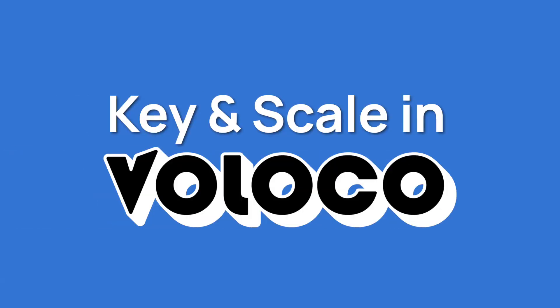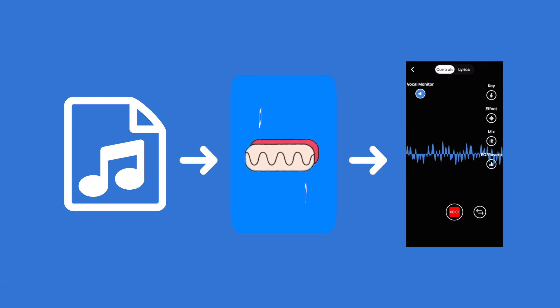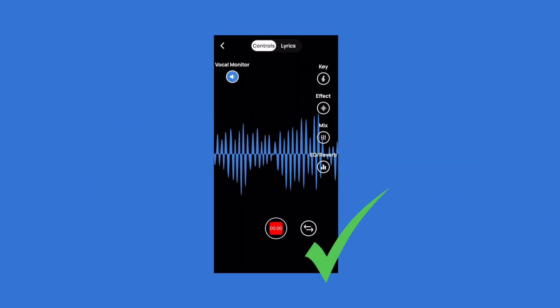Hey, what's up guys, this is Zyna here on the Voloco channel, here to talk about key and scale. One of the best things about using Voloco is that you don't need to know about key and scale or adjust the key and scale to sound great. If you're using a backing track in the app, Voloco will automatically match the key and scale of the backing track for you. Some music creation programs and apps will make you enter the key or the scale, and that's just not something you have to do with Voloco.